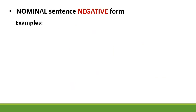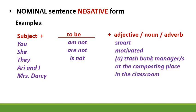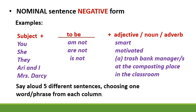Here are some examples. Subjects: you, she, they, Ari and I, Mrs. Darcy. To be in the negative: am not, are not, is not. Adjectives, nouns and adverbs: smart, motivated, a trash bank manager, at the composting place, in the classroom. Say aloud five different sentences, choosing one word or phrase from each column. For example: they are not in the classroom. Your turn — you have one minute.